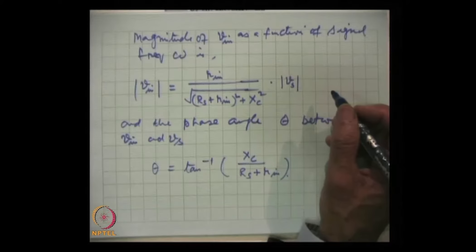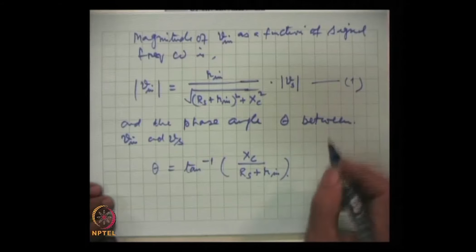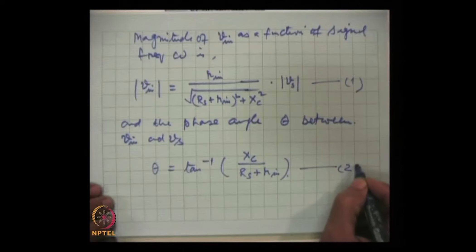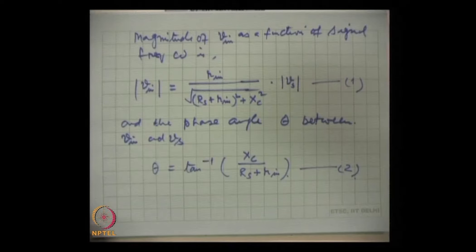The magnitude of V_in is |V_in| = R_in / √((Rₛ + R_in)² + X_C²) · |Vₛ|. This is equation 1. The phase angle θ between V_in and Vₛ is θ = tan⁻¹(X_C / (Rₛ + R_in)). This is equation 2. These two equations are used to calculate the value of capacitor for a particular cutoff value.